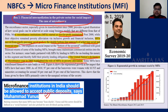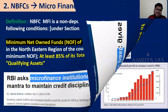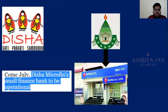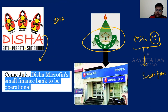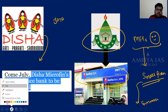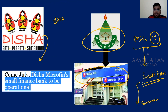Some examples of MFIs include Disha and Bandhan Microfinance — earlier microfinance institutions. If an MFI does well, RBI says it can be converted into a Small Finance Bank and later into a full-fledged commercial bank. For example, Bandhan Bank was earlier an MFI. Disha Microfinance is set to become a Small Finance Bank soon. This gives MFIs the opportunity to grow — from MFI to Small Finance Bank to full commercial bank.